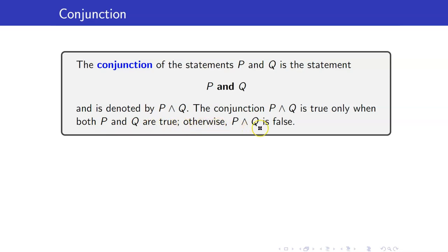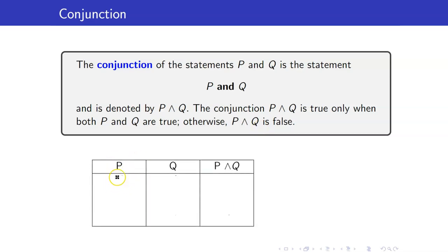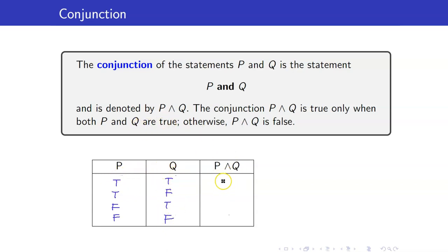The conjunction P and Q is true only when both P and Q are true; otherwise, P and Q is false. Let us create the truth table for this. If you have two propositions P and Q, the possibilities are 4: TT, TF, FT, FF. So this is only true for the first row; for the rest of the rows it will be false.